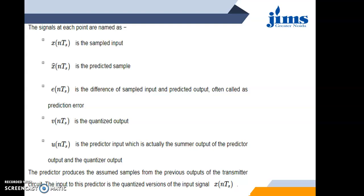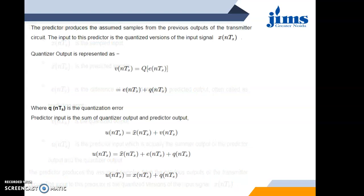In the signal notation: X(NTS) is the sampled value, X̂(NTS) is the predicted value, E is the difference between the two sampled values X and X̂, and U(NTS) is the prediction error or quantized error. The output of the prediction filter is U(NTS) = X(NTS) + Q(NTS).